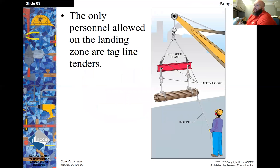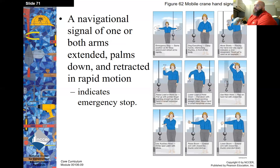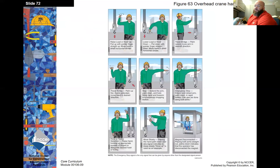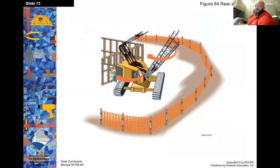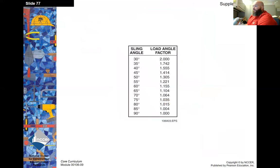The only person allowed on the landing zone is a tagline tender. The landing zone is where material is set down once lifted. A tagline tender for longer material keeps the load from turning and twisting. Hand signals are used to communicate load navigation directions — when equipment is running on a construction site, you can't yell, so hand signals are essential. One or both arms extended with palms down and retracted in a rapid motion indicates emergency stop. Review this material and make sure you complete the quiz.